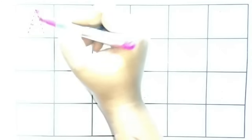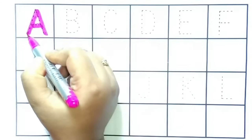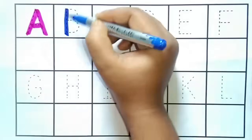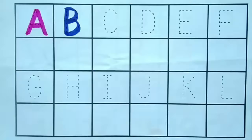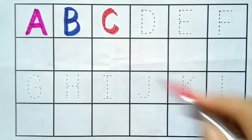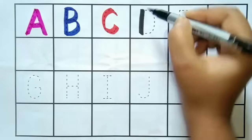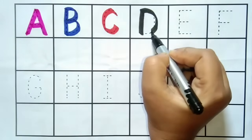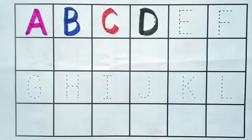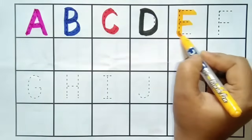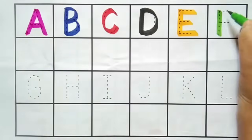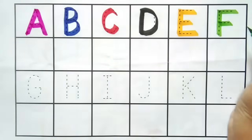A. A for aeroplane, A for aeroplane. B. B for ball, B for ball. C. C for cat, C for cat. D. D for doll, D for doll. E. E for elephant, E for elephant. F. E for fruit, F for fruit.